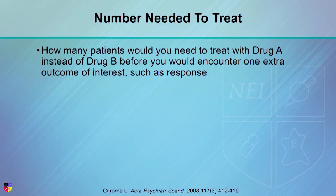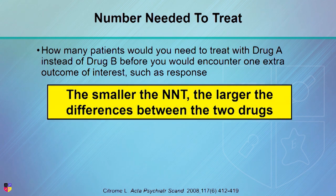So how do we look at something to see if it's important? Number needed to treat is one way. How many patients would you need to treat with drug A instead of drug B before you would expect to encounter one additional outcome of interest, such as response? If it takes fewer patients, the NNT is a lower number, meaning there's a larger difference between the two drugs. So I'm going to go for drug A if it has a low NNT.